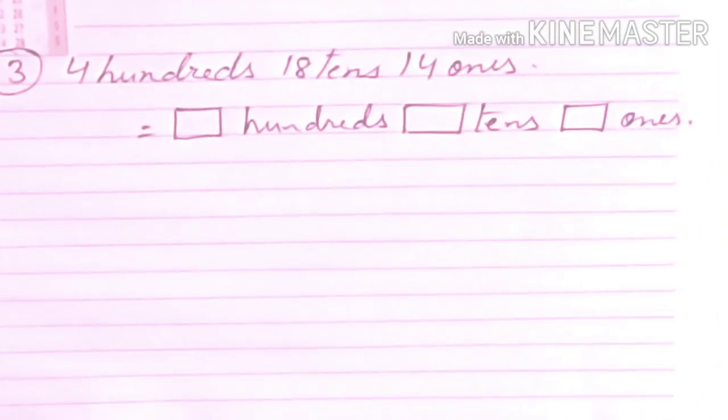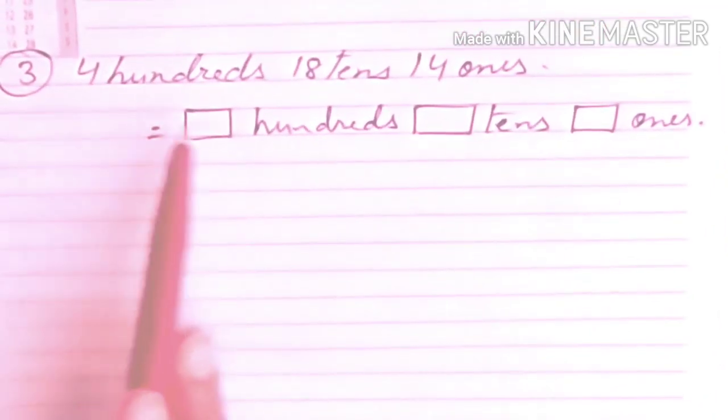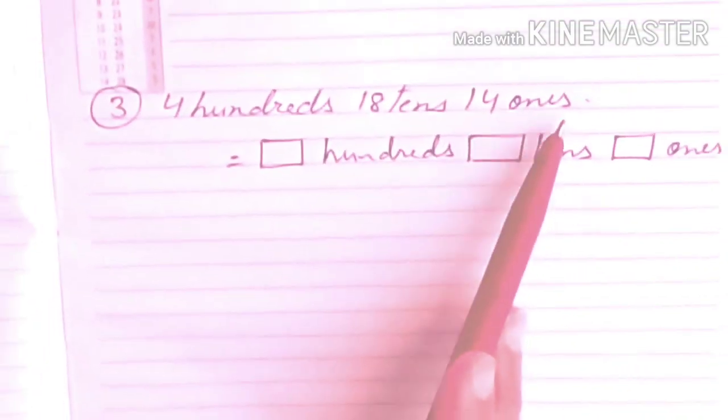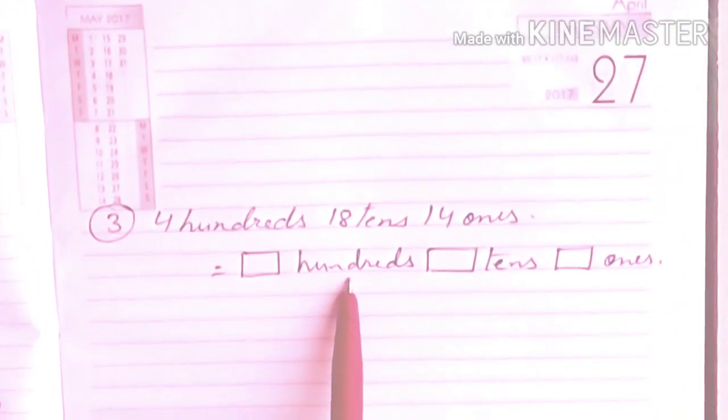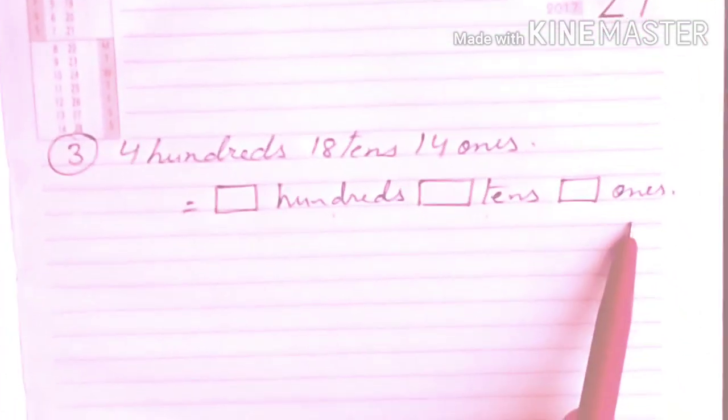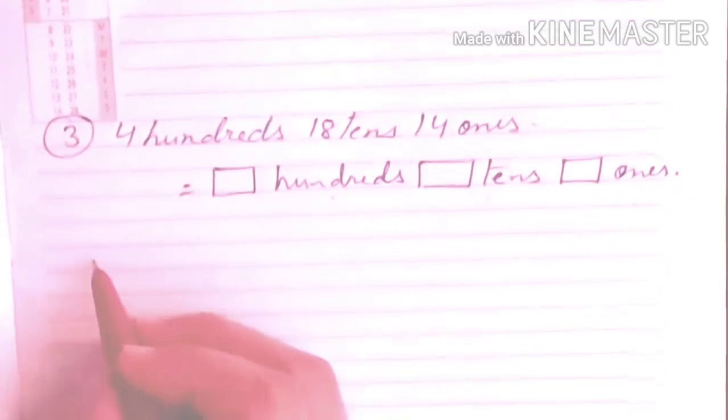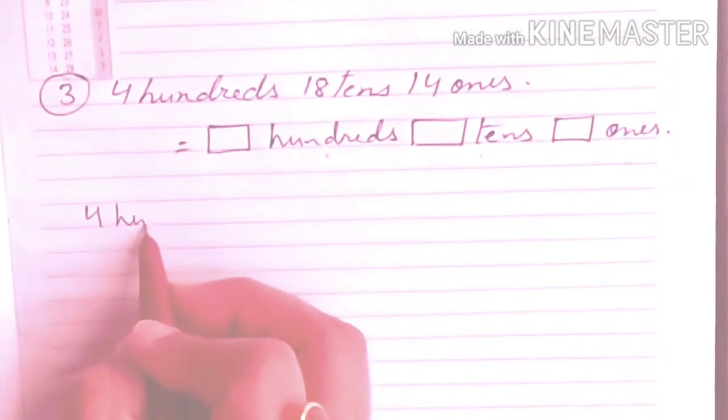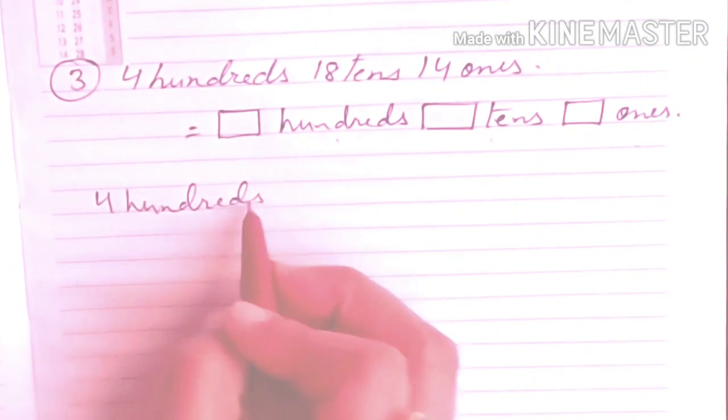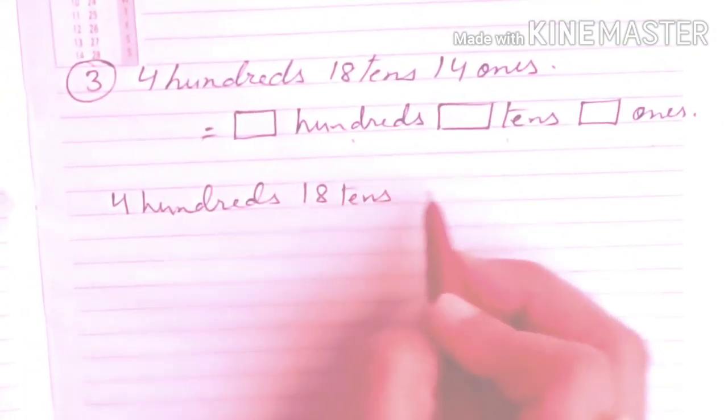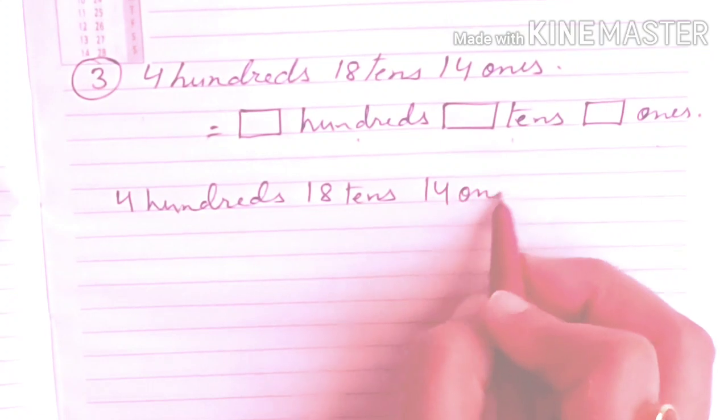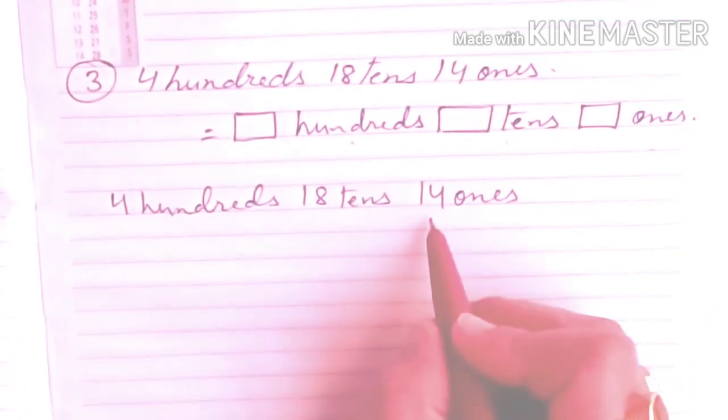Now the third example is 4 hundreds, 18 tens, 14 ones is equals to how many hundreds, how many tens and how many ones? Let's see here. 4 hundreds, 18 tens, 14 ones. We have to start from the right most side.